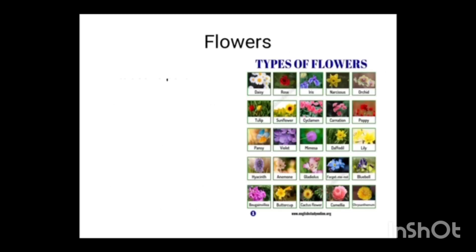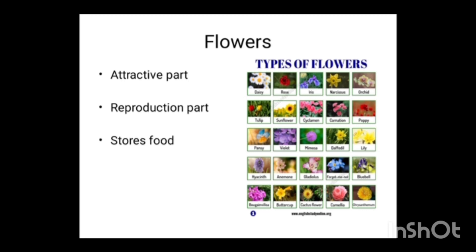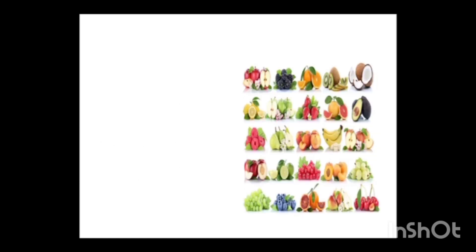Now let us see flowers. Flowers are the attractive parts of a plant. It helps with the reproduction of the plant. In some plants, flowers store food — for example, cauliflower. And flowers change into fruits.